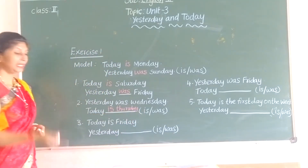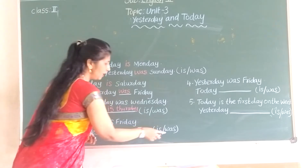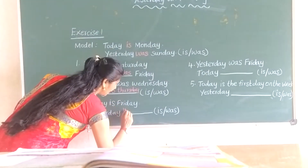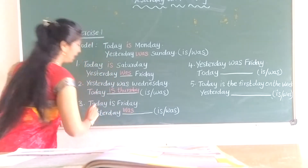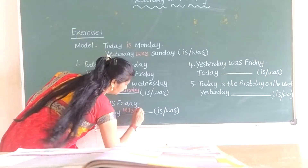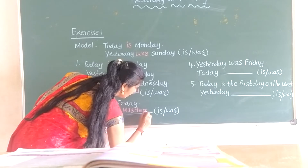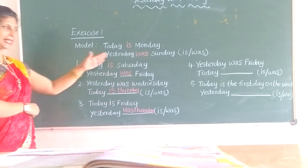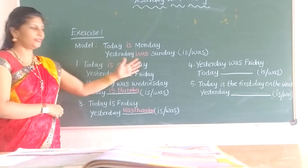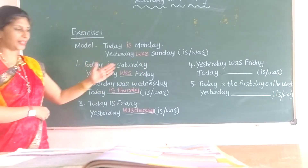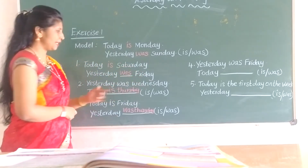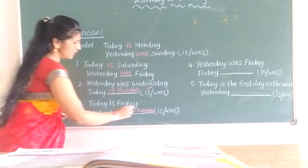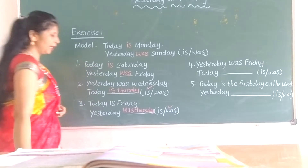Today means Friday. Yesterday was Thursday. Today means 'is', yesterday means 'was'. Today is Saturday — today means 'is', yesterday means 'was'. Okay.